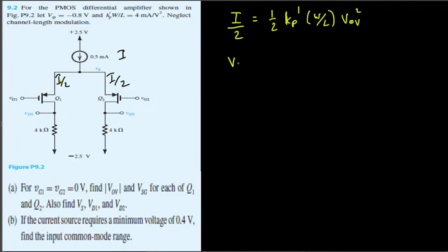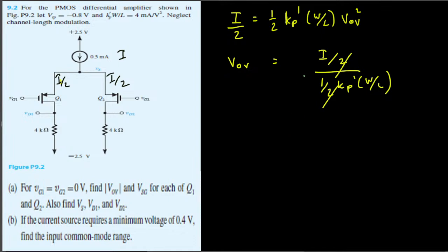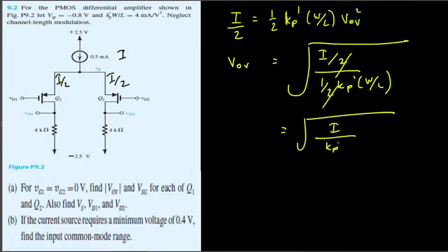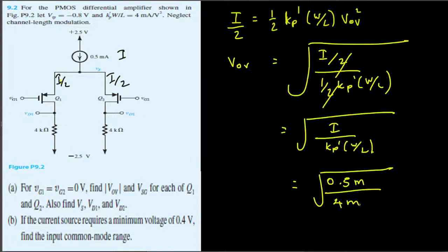Rearranging for Vov: Vov equals the square root of I divided by (kp prime W over L). The factor of one-half and the two cancel. Plugging in I = 0.5 mA and kp prime W over L = 4 mA/V², we get Vov = square root of (0.5 / 4) = 0.354 volts.